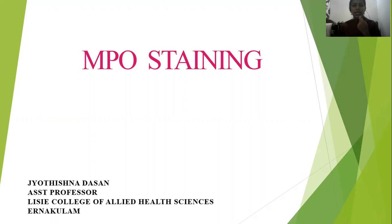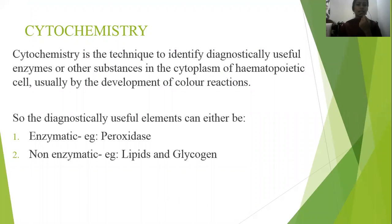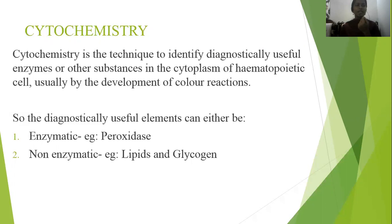MPO is a staining procedure under the topic of cytochemistry. Cytochemistry is a technique to identify diagnostically useful enzymes or other substances in the cytoplasm of hematopoietic cells, usually by the development of color. The diagnostically useful elements can be either enzymatic — for example, peroxidase — or non-enzymatic — for example, glycogen.